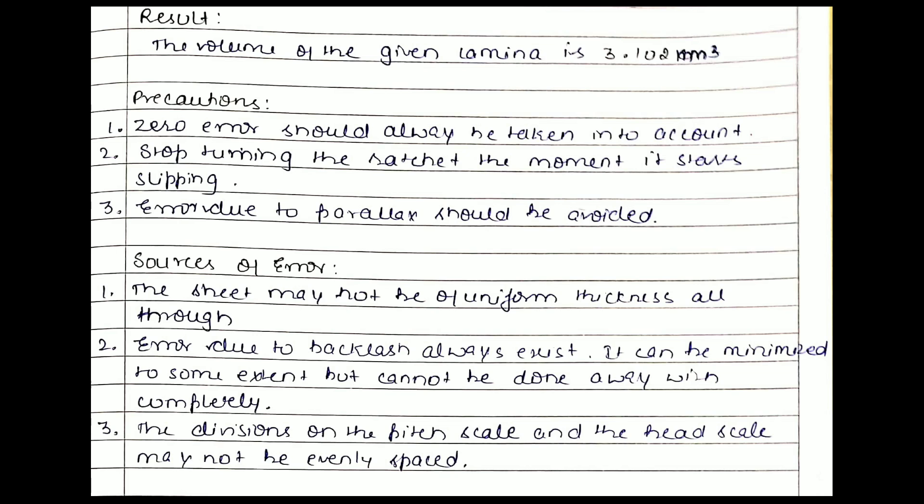After that come the precautions, which are very important. Zero error should always be taken into account. Stop turning the thimble as soon as the ratchet starts slipping, because if you do not, you might get a serious error in your reading. Error due to parallax should also be avoided.